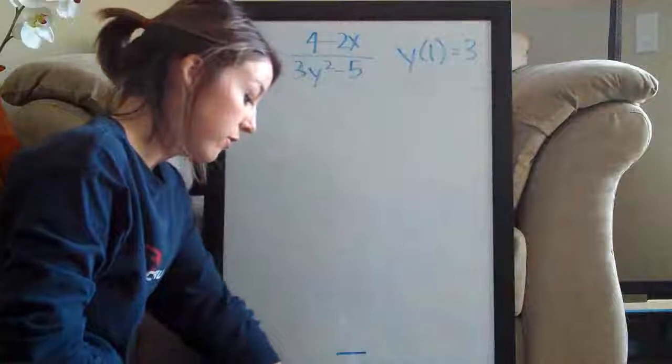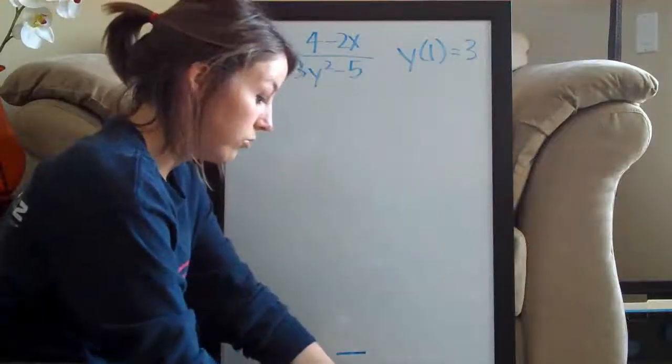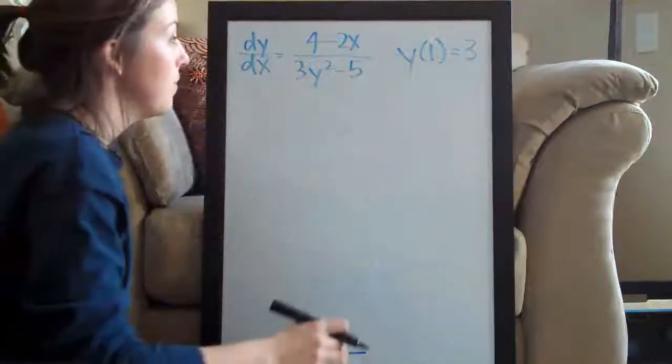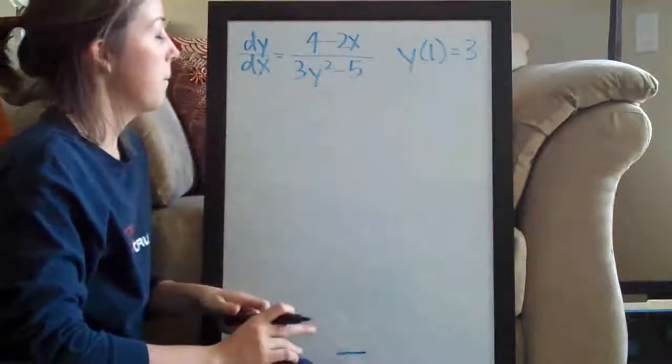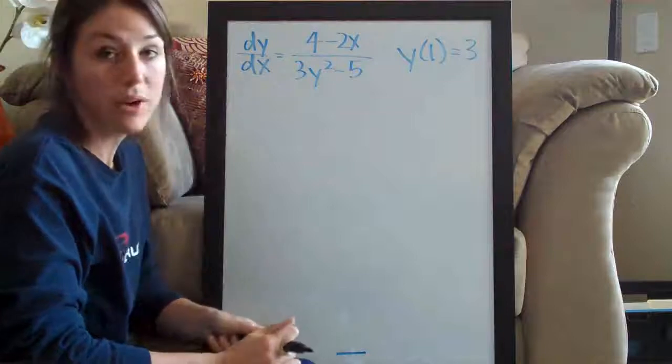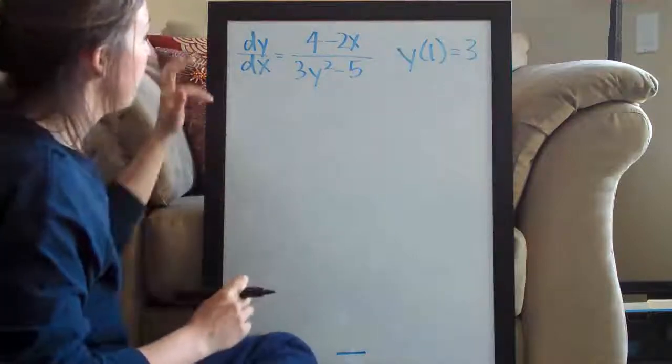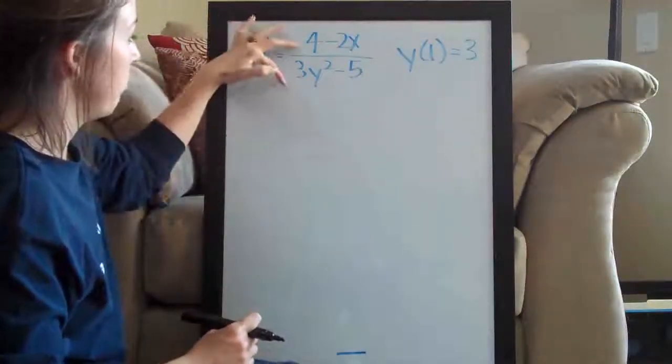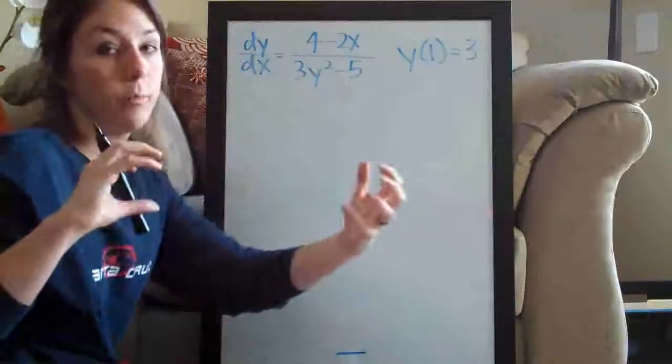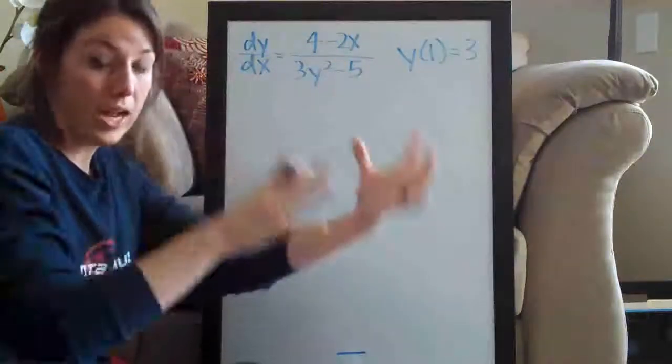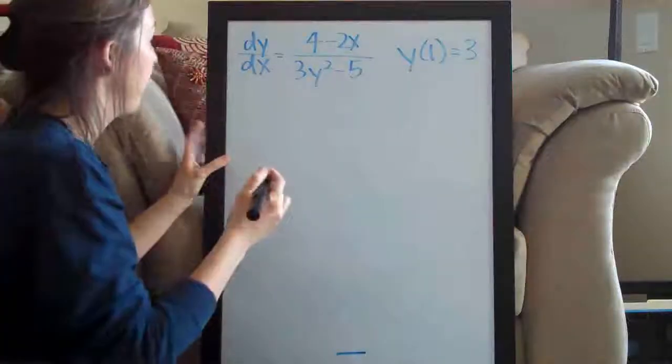The instructions for this problem are to solve this initial value problem. So you may think that this is an initial value problem and it is, but the reason that it's a separable equations problem is because we have y's and x's on both sides of the equation and we need to pull those variables apart and put y's on one side and x's on the other side.